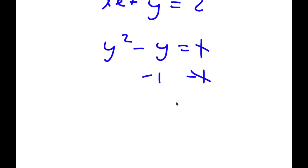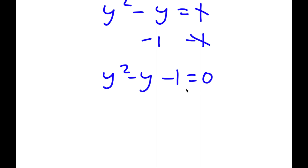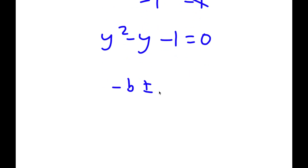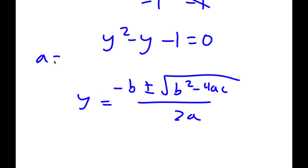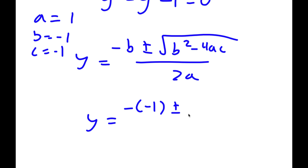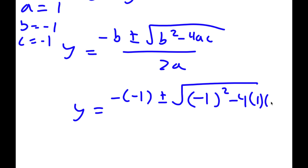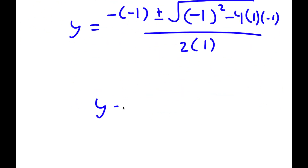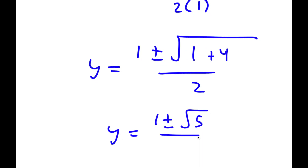I subtract 1 from both sides and get y squared minus y minus 1 equals 0. So now I have a quadratic equation to solve. The quadratic formula is negative b plus or minus the square root of b squared minus 4ac, all over 2a. In this case, a equals 1, b equals negative 1, and c equals negative 1. So I have y equals negative of negative 1 plus or minus the square root of negative 1 squared minus 4 times 1 times negative 1, all over 2 times 1. That simplifies to 1 plus or minus the square root of 1 plus 4 over 2, which equals 1 plus or minus the square root of 5 over 2.